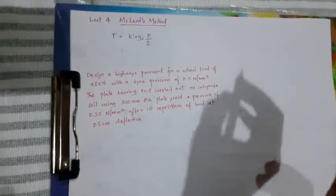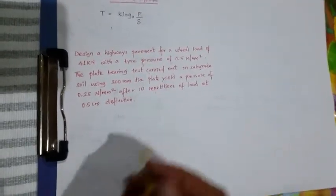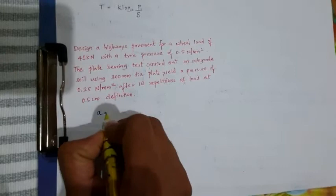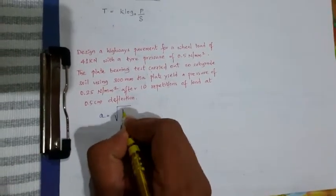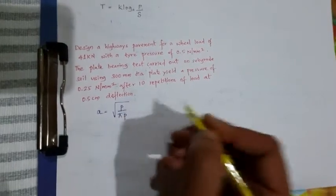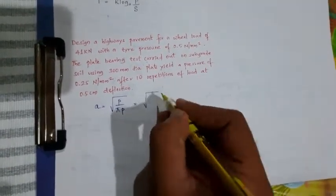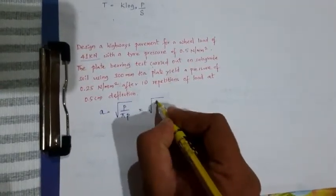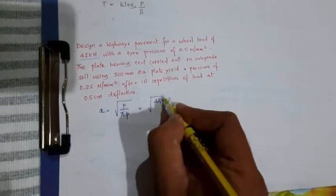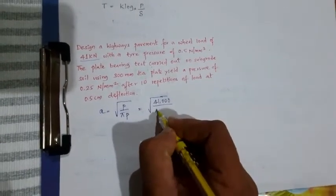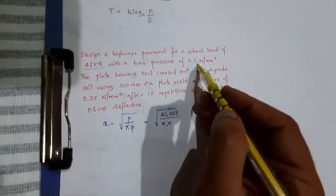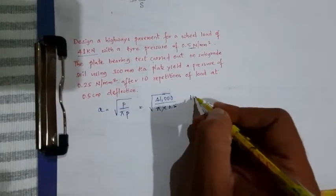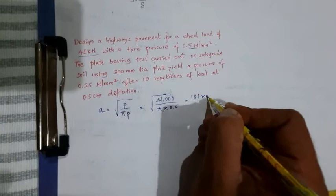Here, they are not provided to you the A, A is nothing but whatever the area. That is given by this A is nothing but root of capital P divided by pi of small p. What is the load here? 41 kN, that is nothing but 41,000 N divided by pi, and what is the pressure here? 0.5. So you are going to get 161 mm, that is the A value.